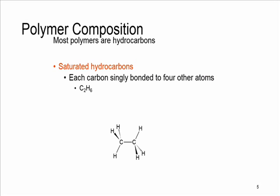Most polymers are hydrocarbons, that is, they are made up of hydrogen and carbon. Hydrogen and carbon have a low atomic number and atomic weight, so we expect the polymers to be light compared to other materials such as ceramics and metals.